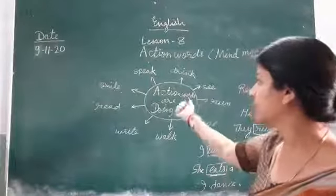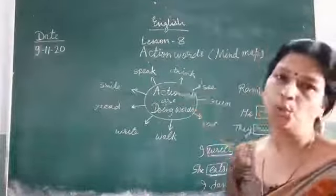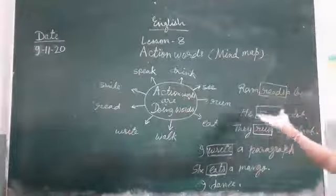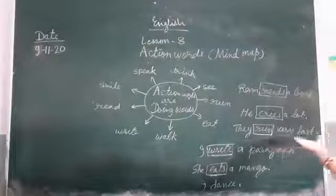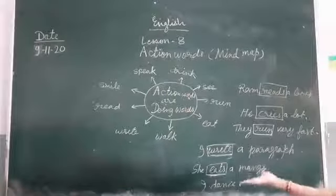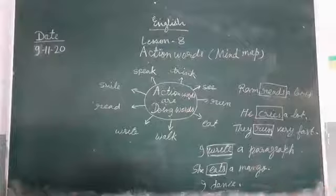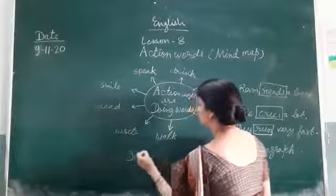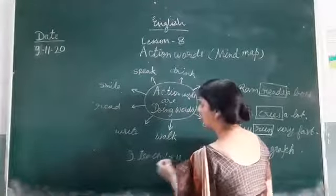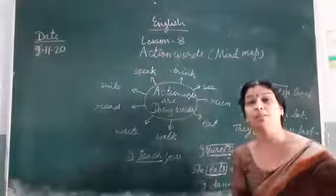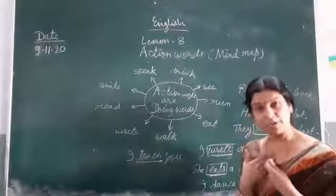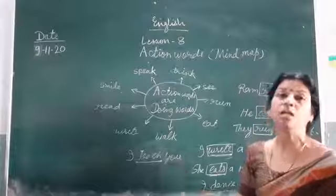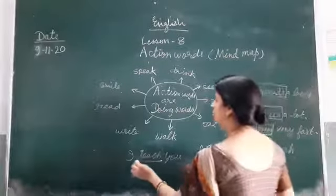All doing words are action words and all action words are doing words. Ram reads the book. She cries. They run very fast. I write the paragraph. She reads the book. I dance. I teach you.